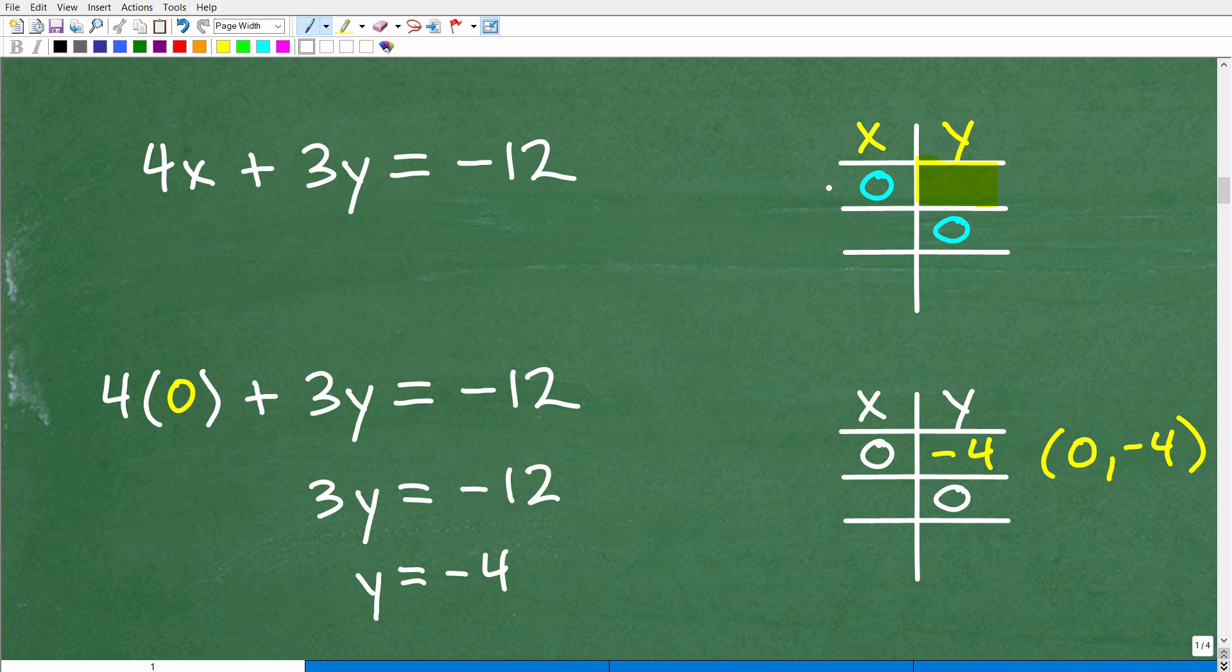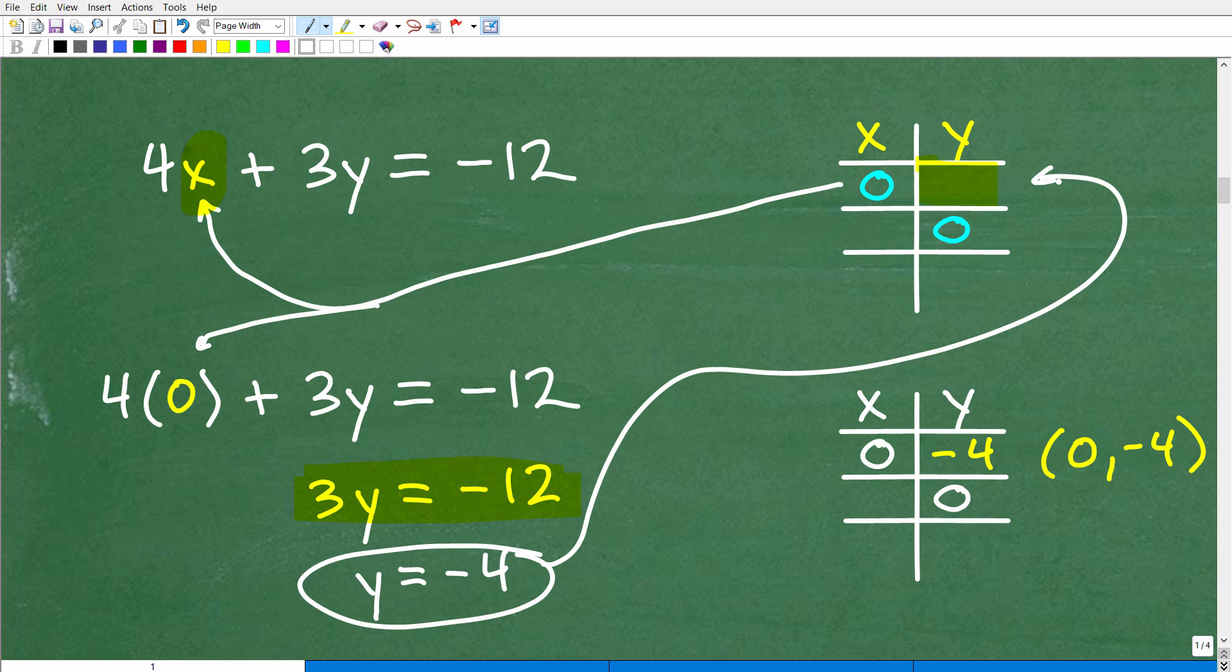So when x is equal to 0, what is y? Well, pretty easy to figure this out. All we need to do is plop in a 0 for x. So let's go ahead and put in a 0 for x and then I'll solve for y. So when I do that, you can see that right there. So 4 times 0 is what? That's 0. I don't even have to write the answer there. 4 times 0 is 0. So that means I'm left with this nice little equation right here. 3y is equal to negative 12. And then just go ahead and divide both sides of the equation by 3. I get y is equal to negative 4.